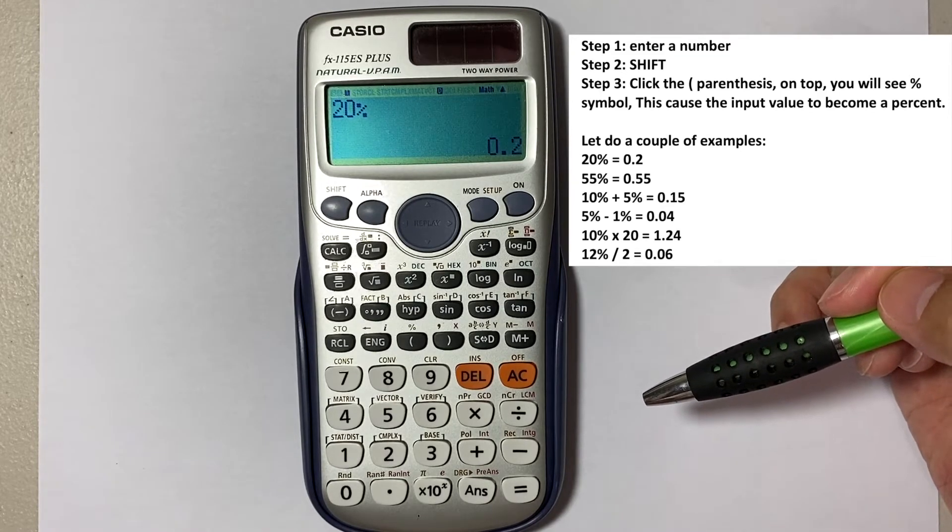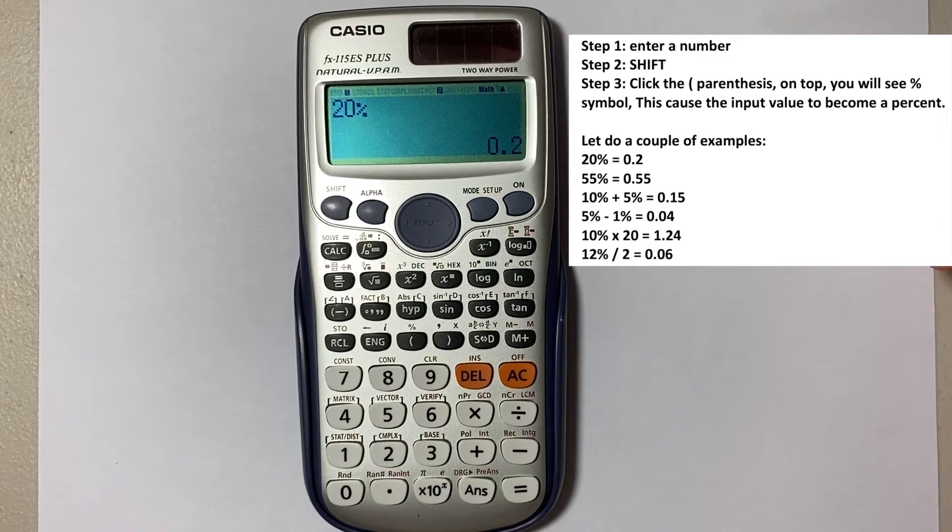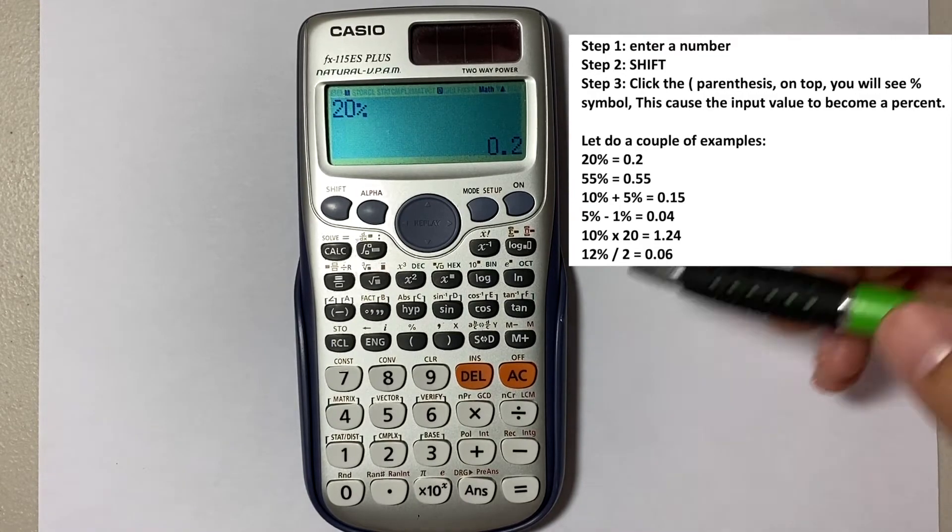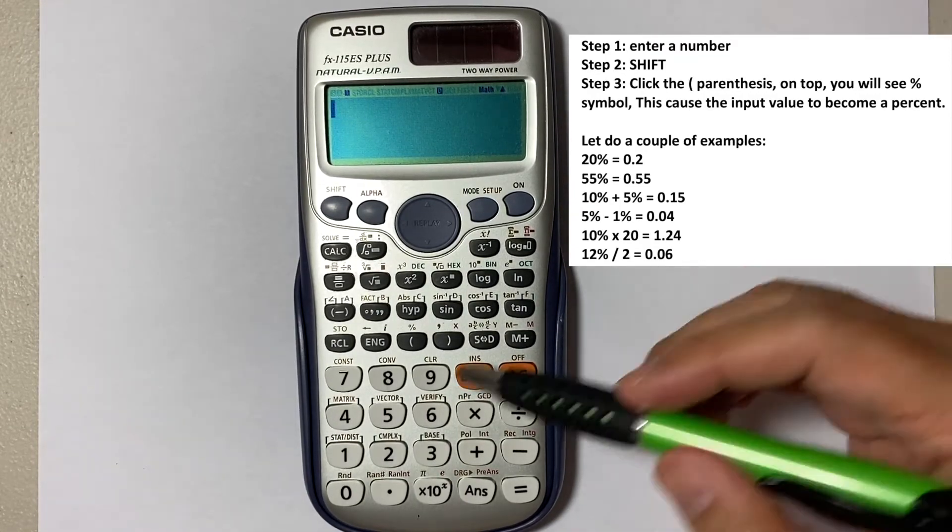Let's do a couple of examples right here. If we have 55 percent, that's going to be 0.55.